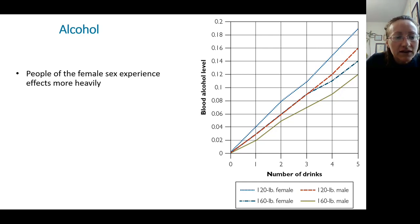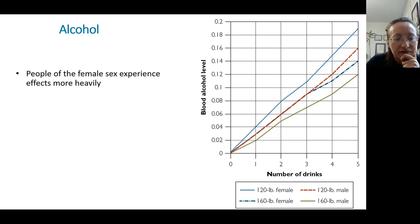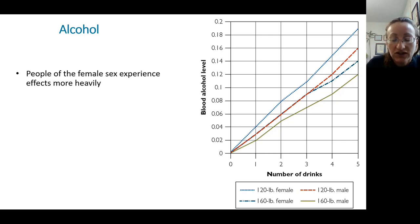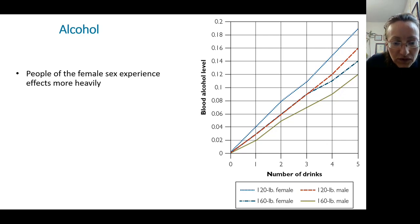Back to alcohol: people of the female sex, assigned female at birth, have lower tolerance for alcohol — they feel the effects more heavily. There are biological reasons for that; women lack a certain enzyme that helps break down alcohol. This is based on both gender and weight, as you can see in this graph.